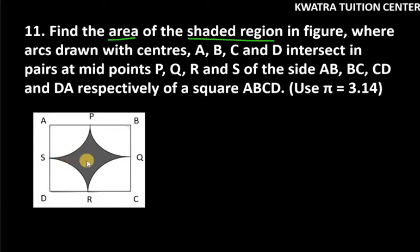So you can clearly see the shaded region that is P, S, R and Q where arcs drawn with centers A, B, C, D intersect in pairs at midpoints. P is the midpoint of AB, Q is the midpoint of BC, R is the midpoint of DC and S is the midpoint of AD.